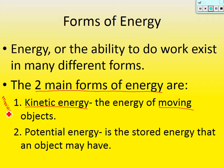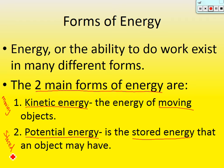The second main form of energy is called potential energy. Potential energy is the stored energy that an object may have. In the margins by 'potential,' let's write 'stored.' So even though there are many different types of energy, these are the two main types: kinetic, which is moving energy, and potential, which is stored energy.